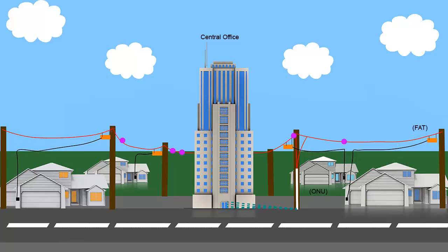The downside of this design, though, is the number of fibers that would be required in the OSP cables and the Central Office. Allowing for spare fibers and future growth would result in significantly more fibers in the network than subscribers. This strategy is only really effective where service areas are very close to the Central Office.